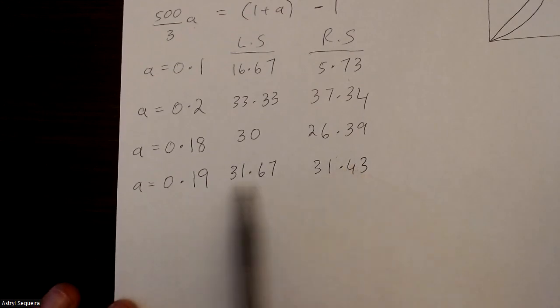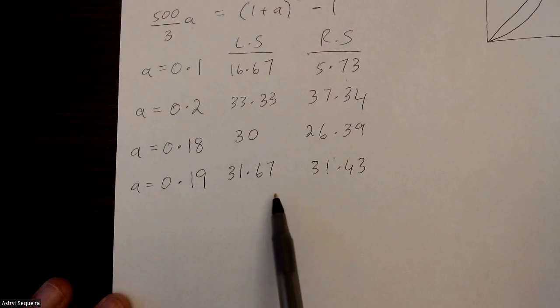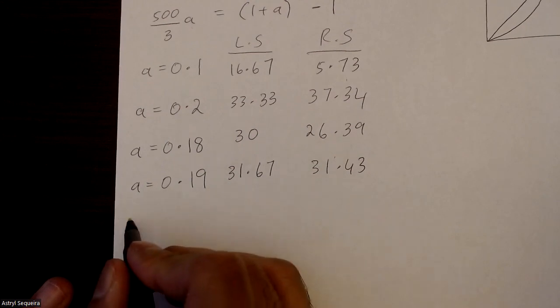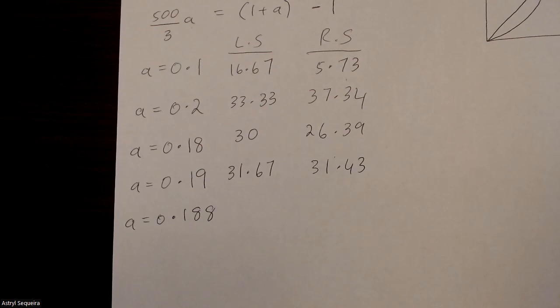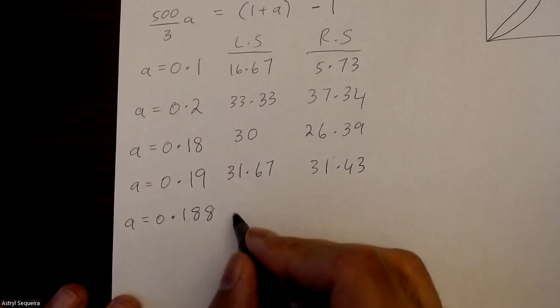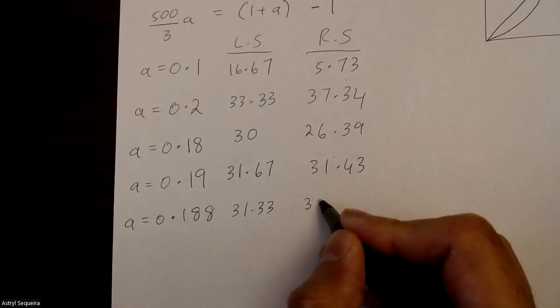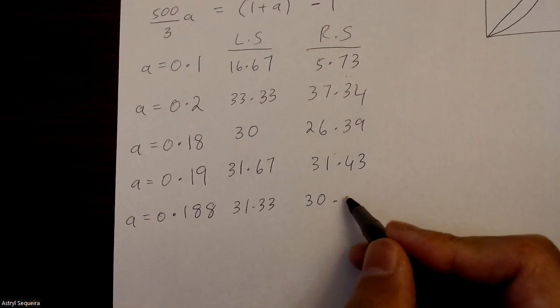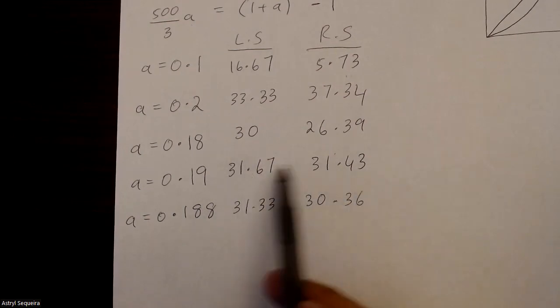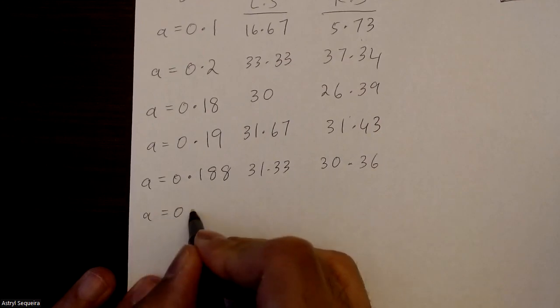Okay. So what you notice now is these are really close, which means our solution is pretty much right next to 19 percent. If I look at this one over here, I can tell that I have to probably go slightly less. So maybe 0.188. This one's 31.33. And this one is too low now. I actually went in the wrong direction. You can tell I went in the wrong direction because the gap is getting larger. Because if you look at the gap over here, it's just 0.2 approximately. But over here, the gap is larger. So it means I've gone in the wrong direction.